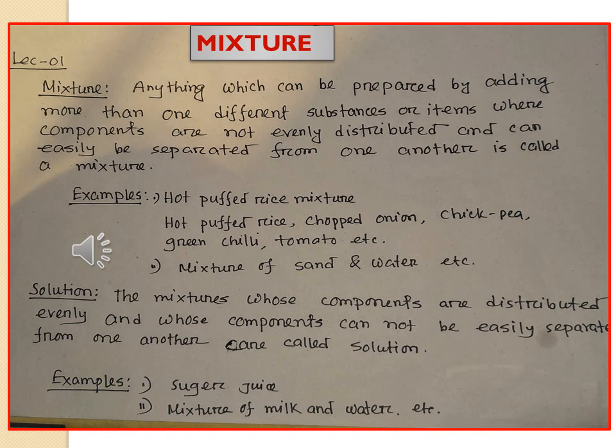Now I would like to say something about solution. The mixture whose components are distributed evenly and whose components cannot be easily separated from one another is called a solution. You have to notice whether all the components are distributed evenly and whether all the components cannot be easily separated. For example, in sugar juice and in a mixture of milk and water, you cannot separate sugar or milk from the water, and both are evenly distributed throughout the solution.